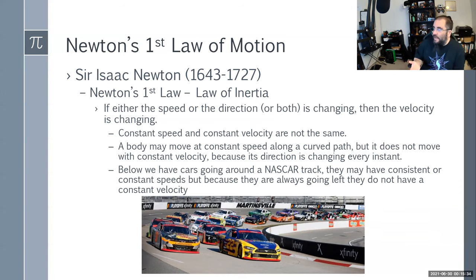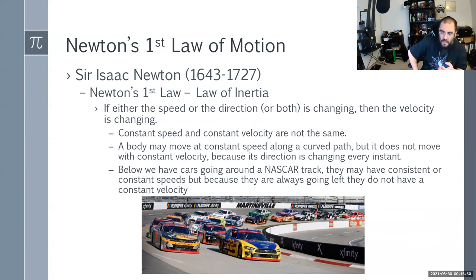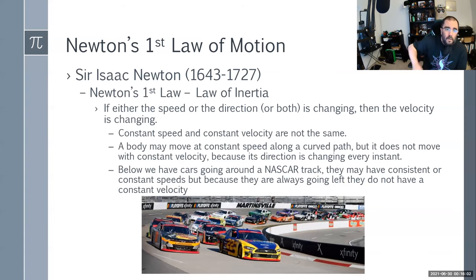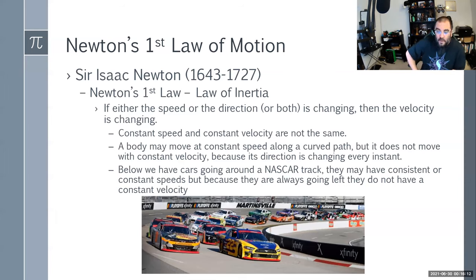A body may move at a constant speed along a curved path but does not maintain a constant velocity because direction is changing every instant. NASCAR cars, for example — they may maintain a constant speed of 180 miles per hour around the track, but every time they go around a corner and make a left turn, they're changing their velocity because they're changing direction. The only way to truly have constant velocity is straight-line motion at a constant speed without changing direction.